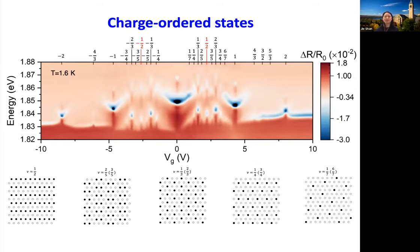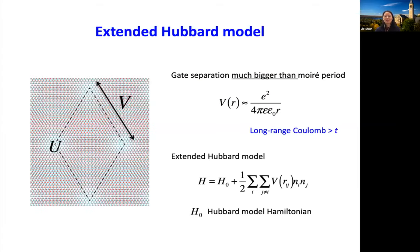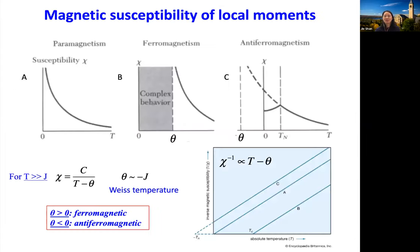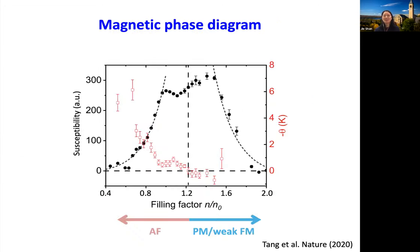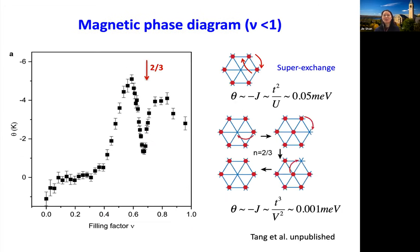Quick question about the last slide where you show that around two-thirds filling you have a drop of the critical temperature. Can it be related to frustration in these lattices and maybe spin liquids? This is not frustrated — the two-thirds dilute lattice type is less frustrated. The fractional filling makes frustration less important; the Mott state at half filling is more frustrated because it's a triangular lattice, and if you make it more dilute, this is less of an issue.